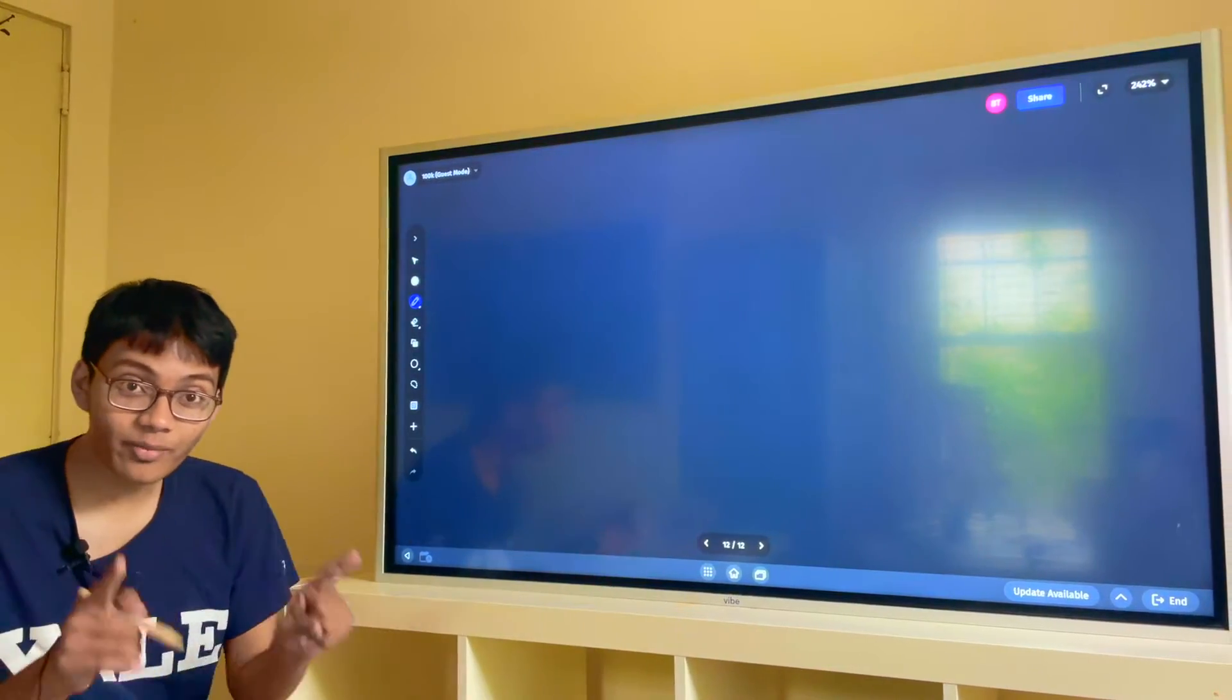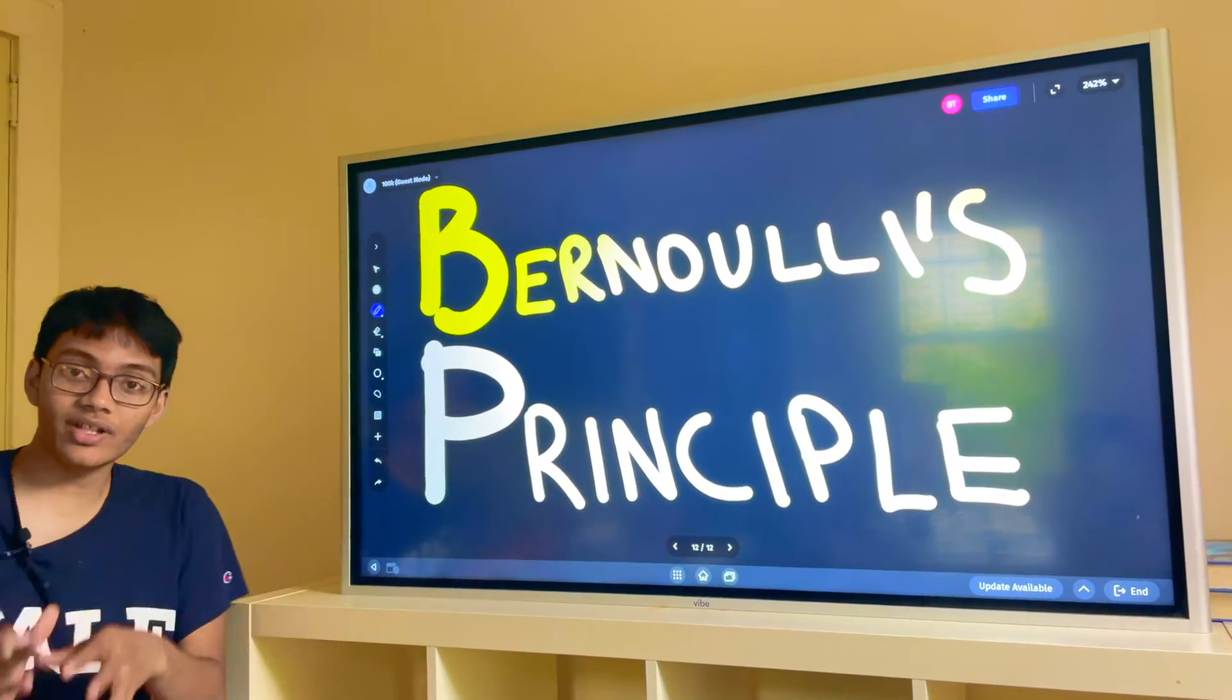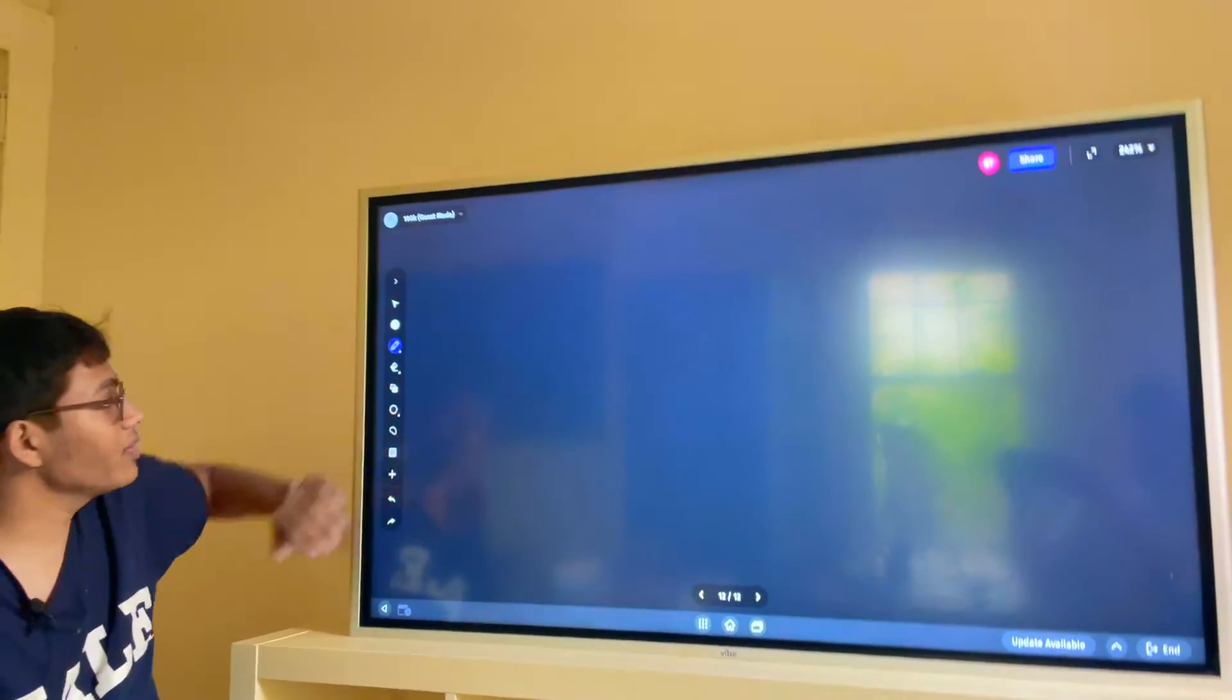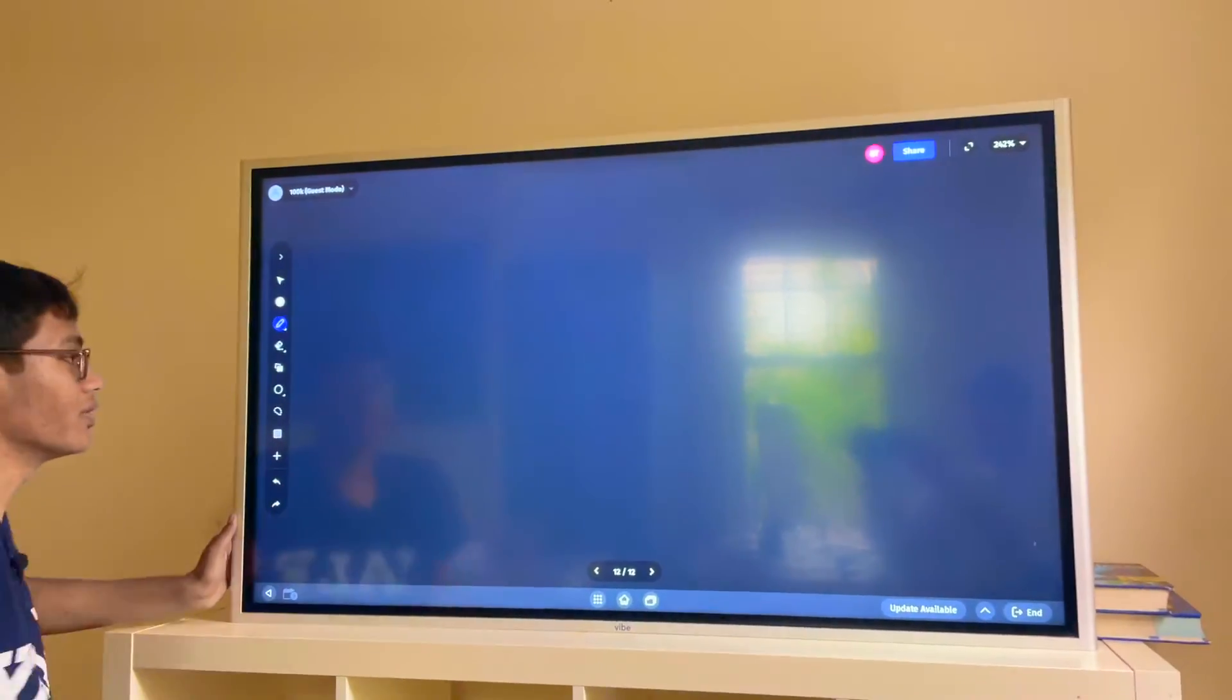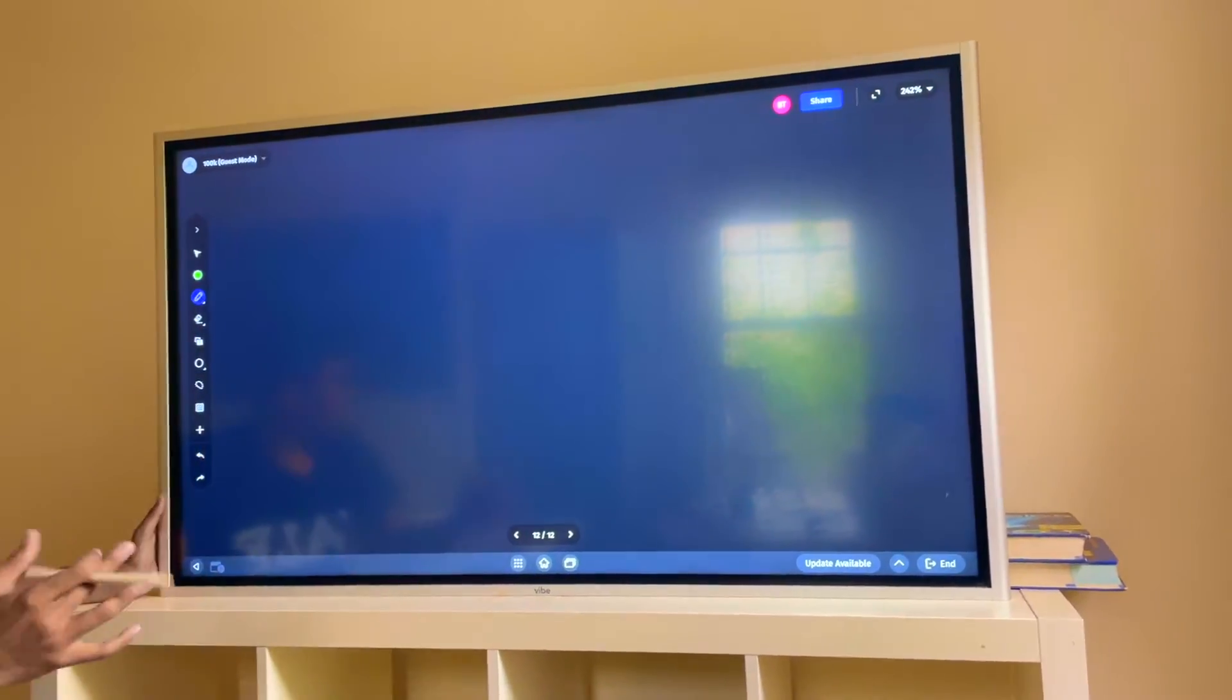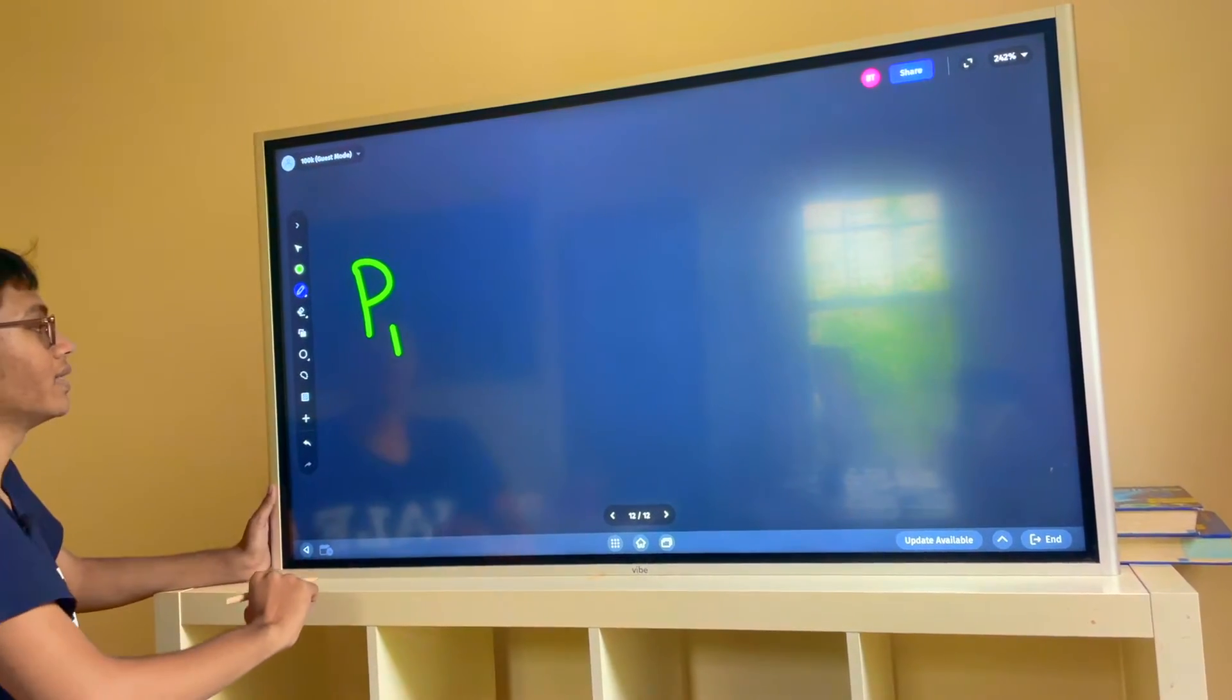We just saw an example of Bernoulli's principle. Let's go ahead and check it out. It says that pressure and velocity are inversely related. Why does it say that? Well, let's check out the formula. So the formula for Bernoulli's principle is as follows. We start with our static pressure p1, so this is just the pressure of our fluid.